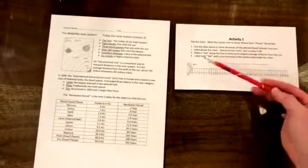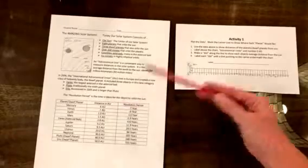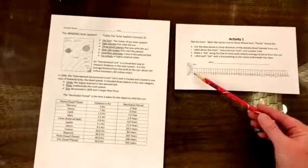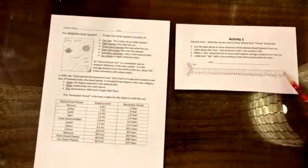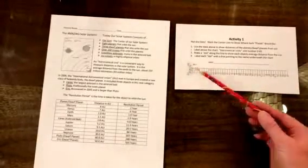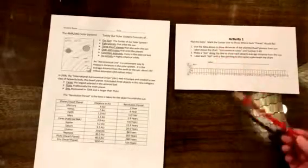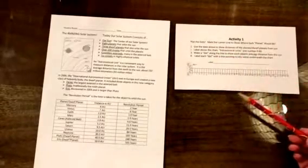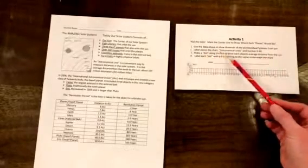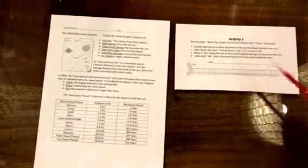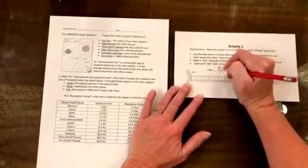The first one, you're going to be working with this data, the AUs, you're going to be working with this data here and it has this little line to kind of show distance from our little sun over here. So if you follow each of these steps, you will be able to complete this correctly. So use the data to show the distances, label the chart astronomical units.